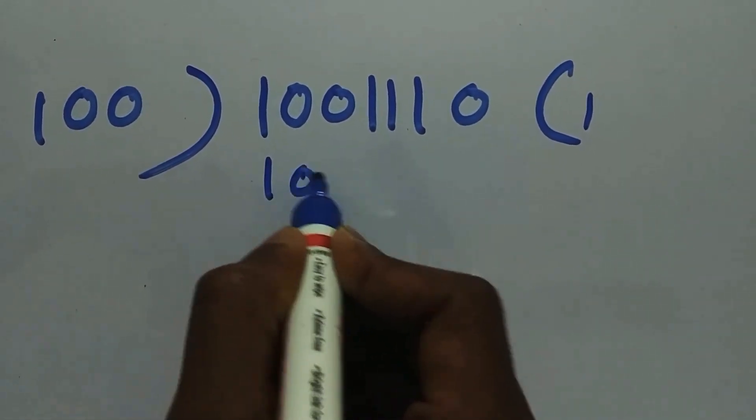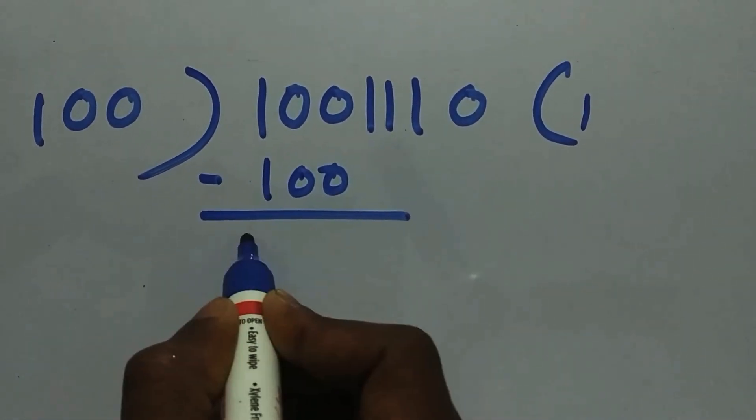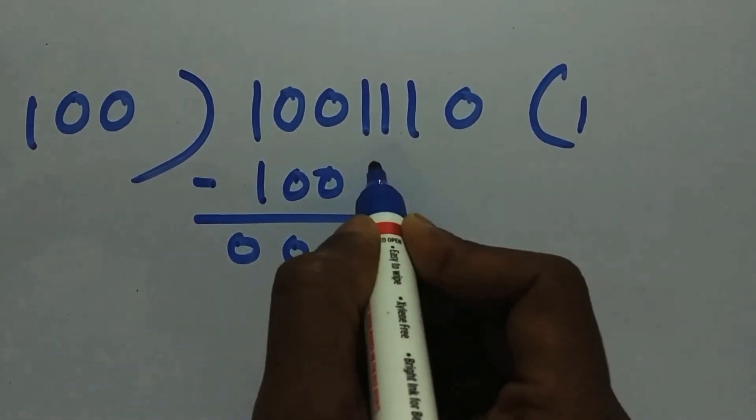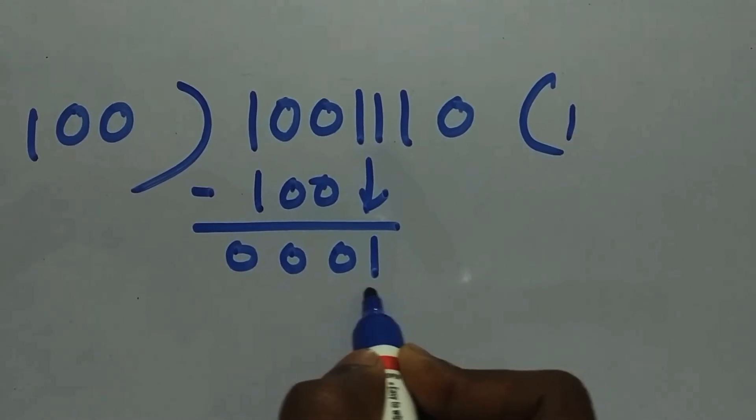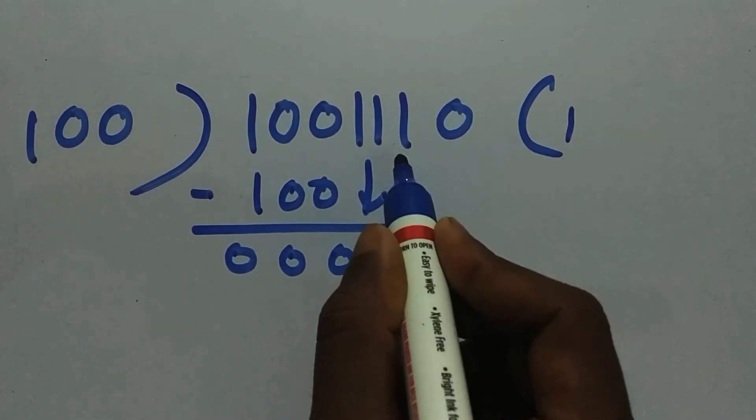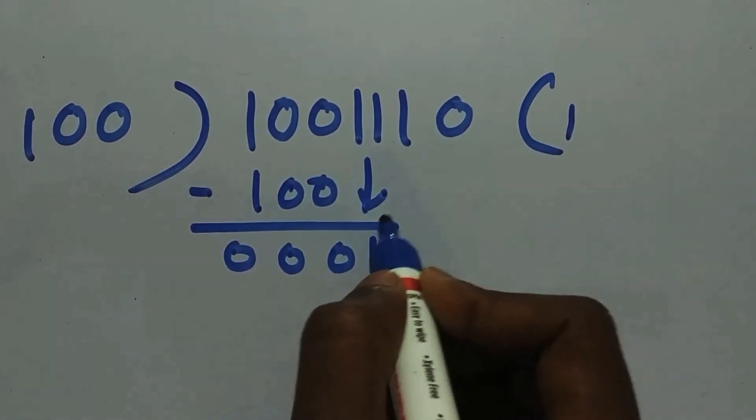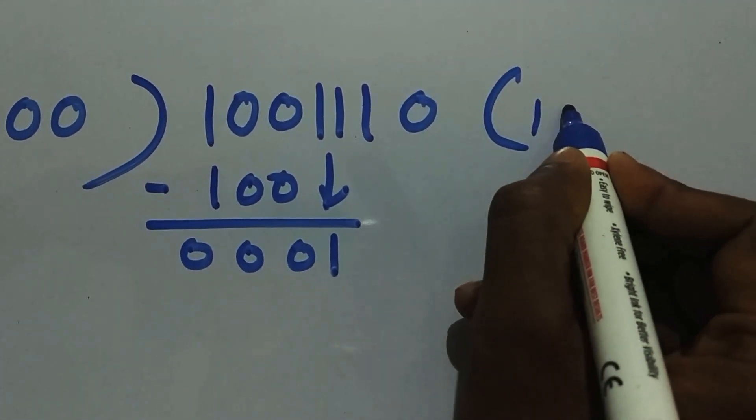So it will be 100. Now subtract it. It's all zeros. Now we need to bring the next value down. We brought the next value, but is it divisible by 100? No, it's not. So we need to bring one more value. To bring one more value, we need to add an extra 0 in the quotient.